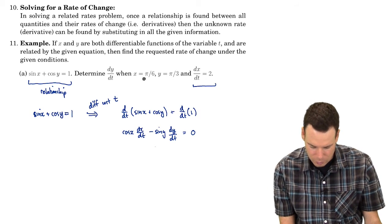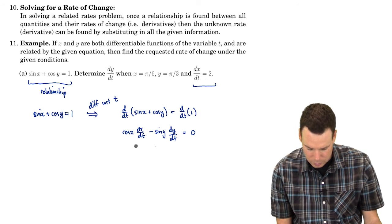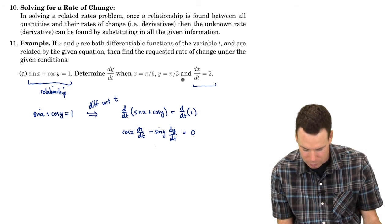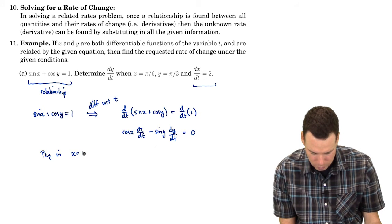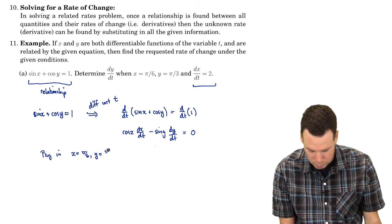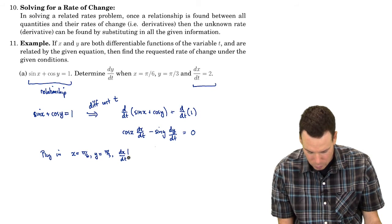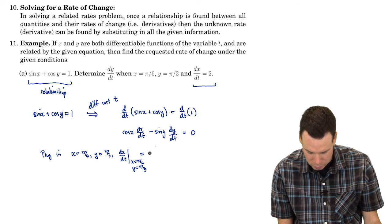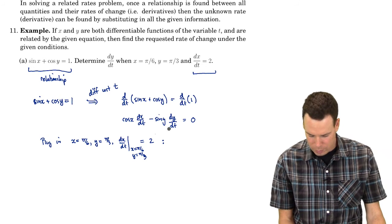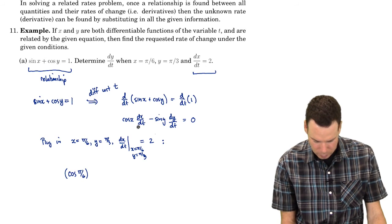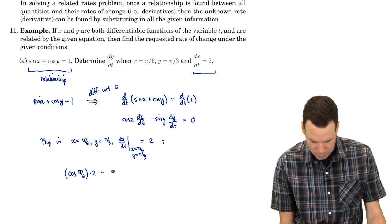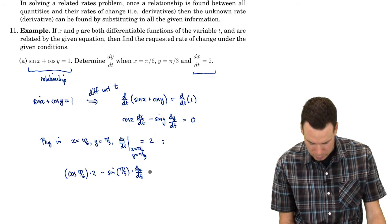We know dx/dt, and we know x and y. At the precise moment when x is π/6 and y is π/3, dx/dt is equal to 2. Substituting into the expression above, we get cos(π/6) times dx/dt — that's times 2 — minus sine(π/3) times dy/dt, equals zero.